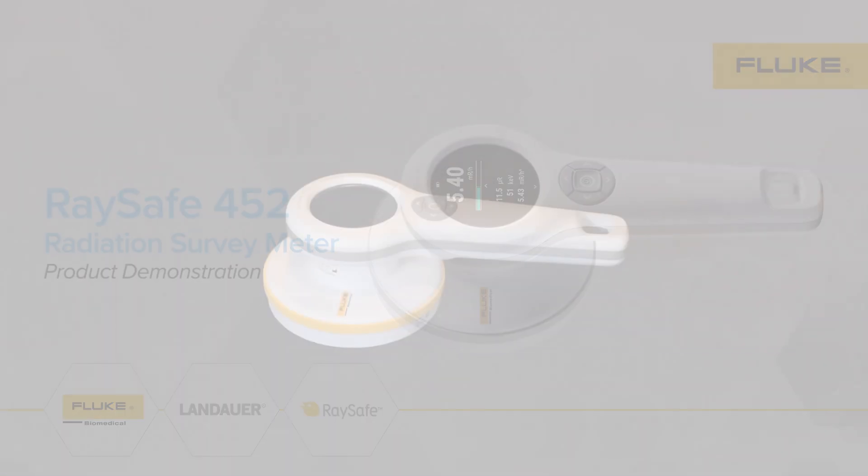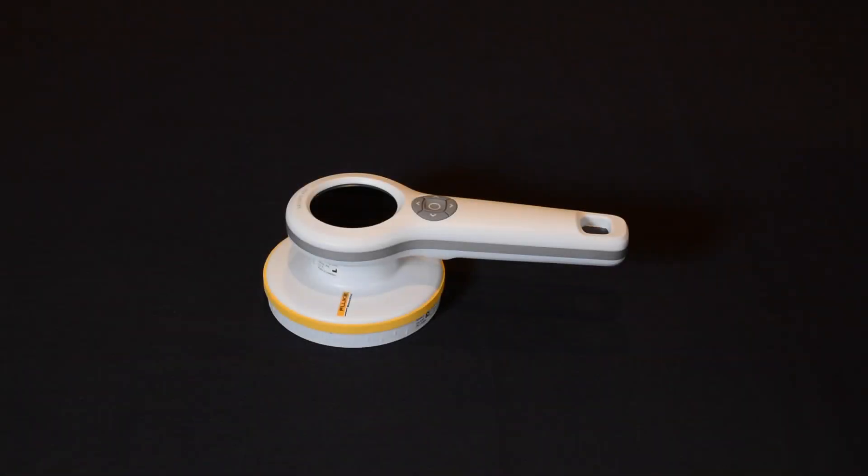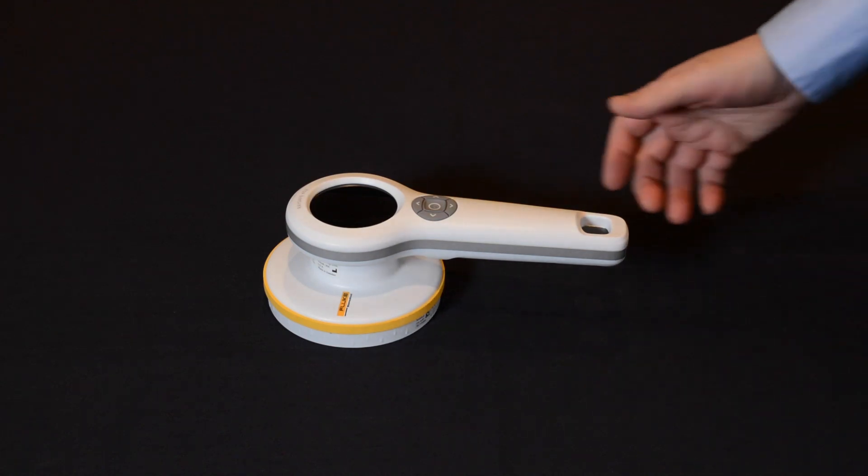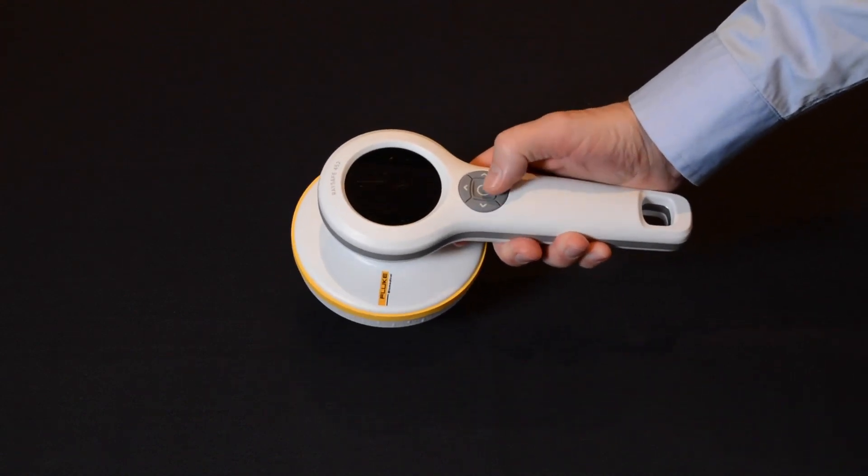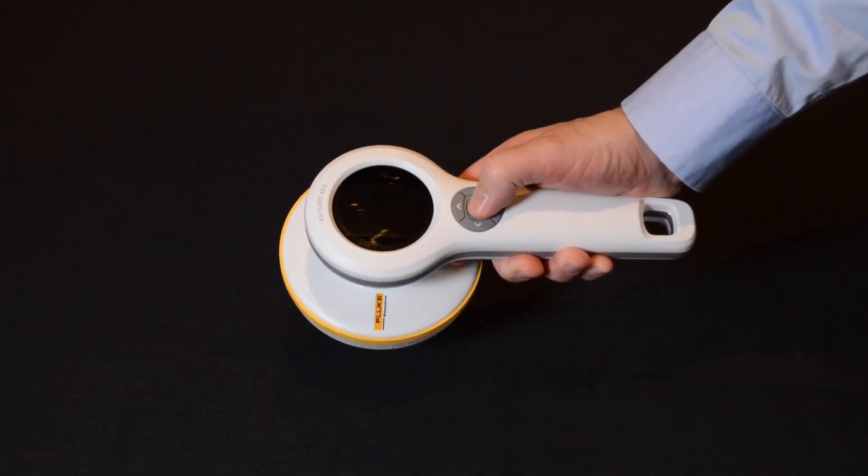This is the Raysafe 452, a new innovative survey meter that is designed to capture radiation in multiple ways with different definitions. This instrument is designed based on what you need as a user and not by the properties of the technique or application.